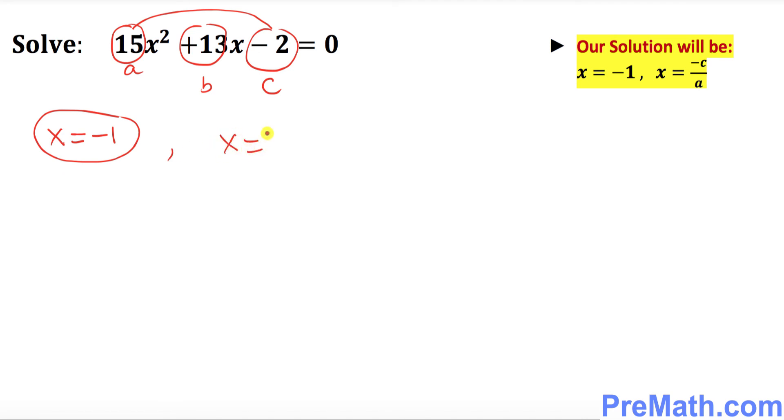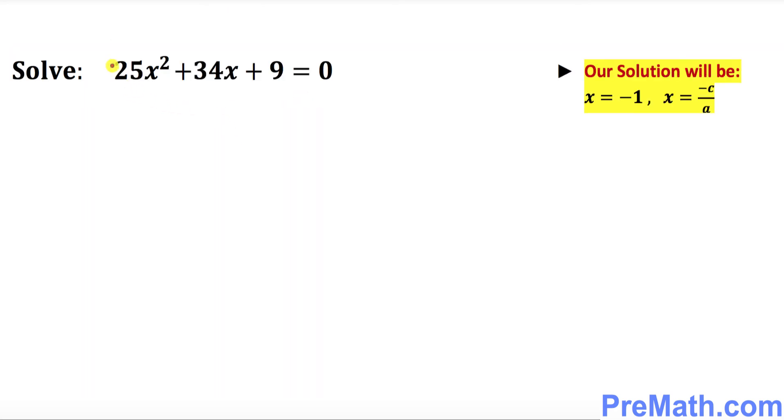One of the solutions is always going to be x equals negative 1. The other one is negative c. So this negative 2 becomes positive 2 because of the negative of c, so 2 over 15. These are our two solutions.